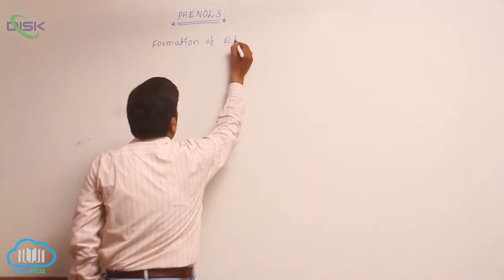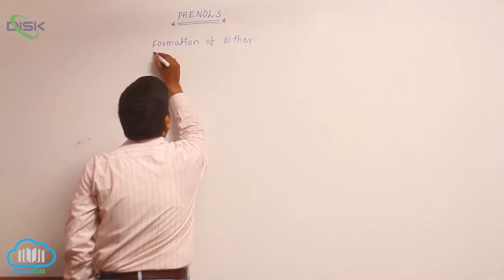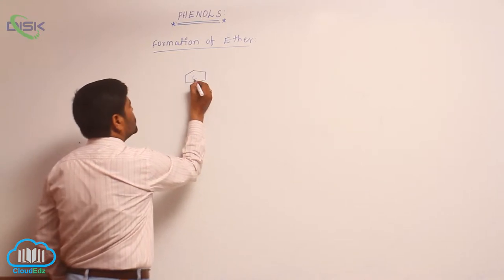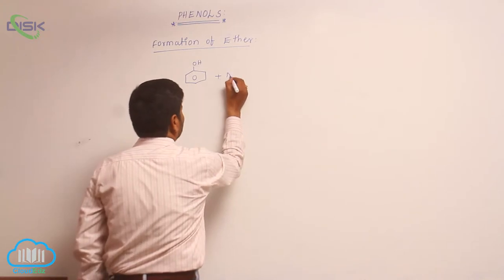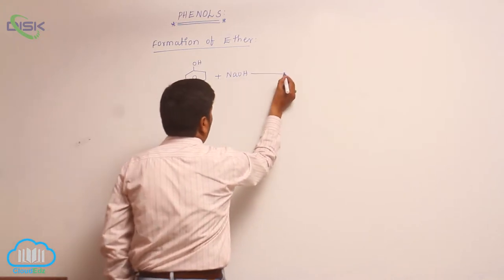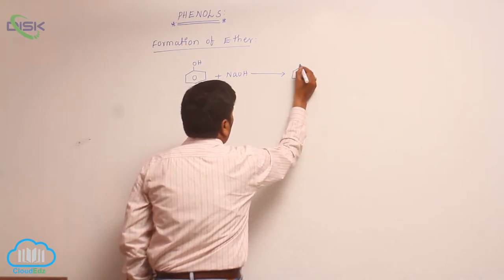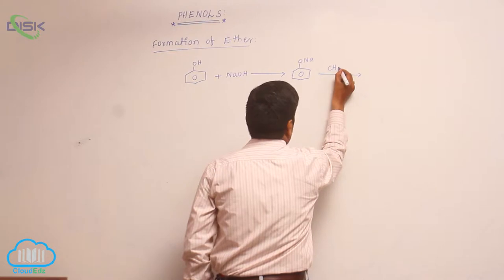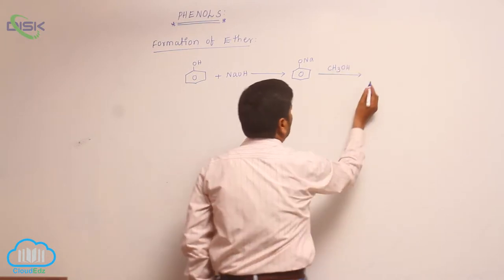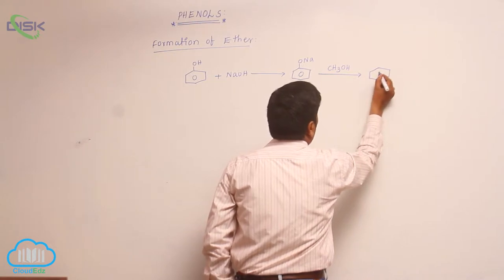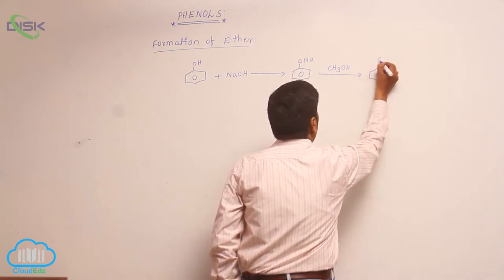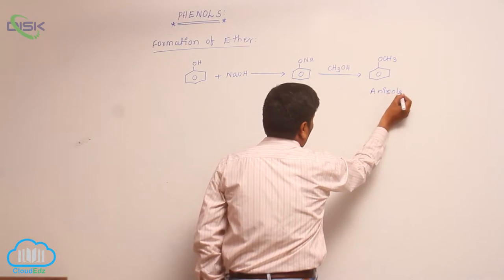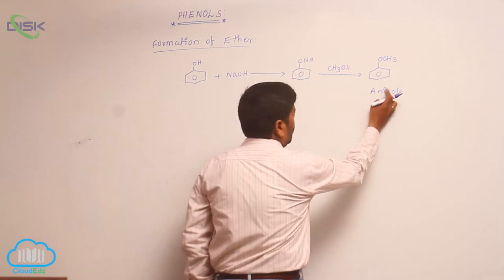The next property of phenol is formation of ether. Phenol reacts with sodium hydroxide to form sodium phenoxide. This sodium phenoxide reacts with methyl alcohol to form an ether known as anisol or methoxybenzene.